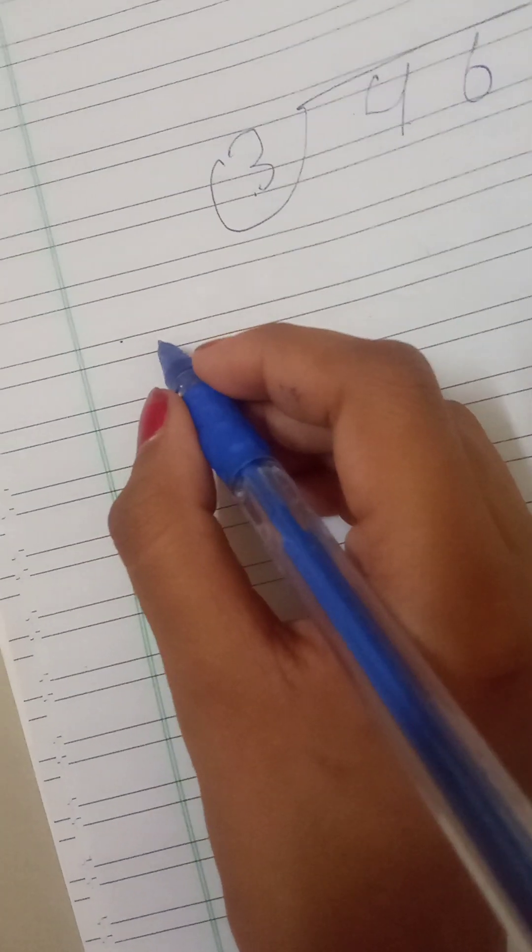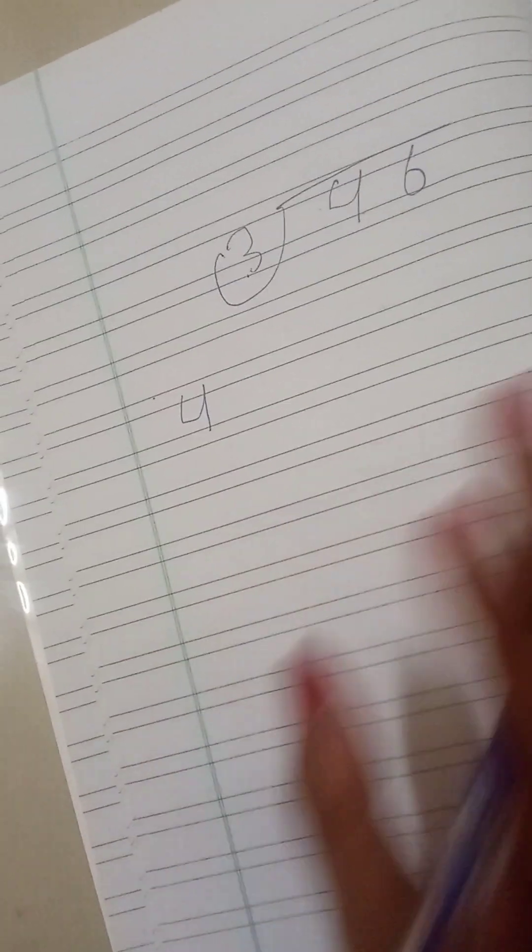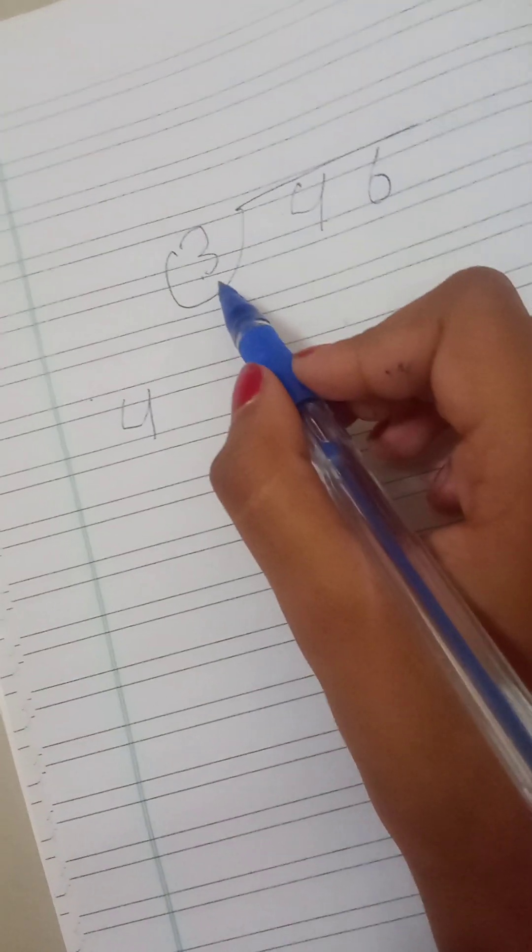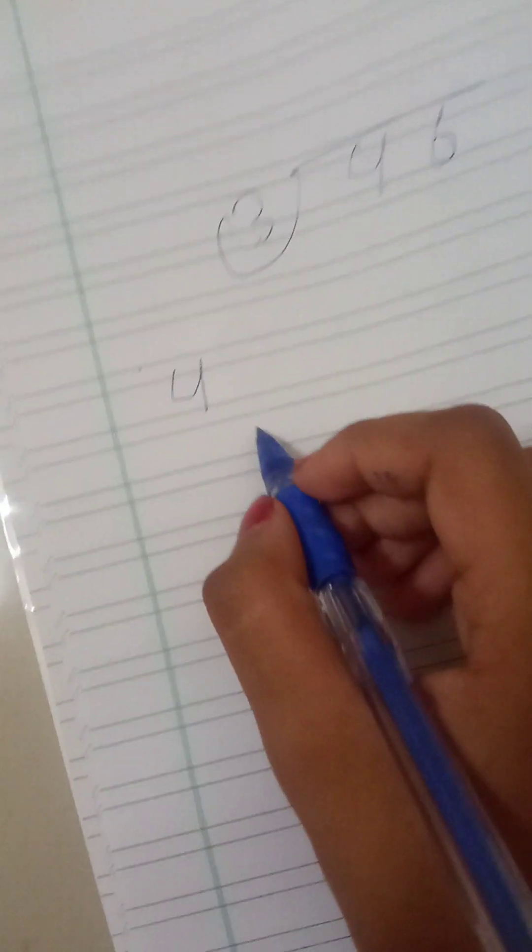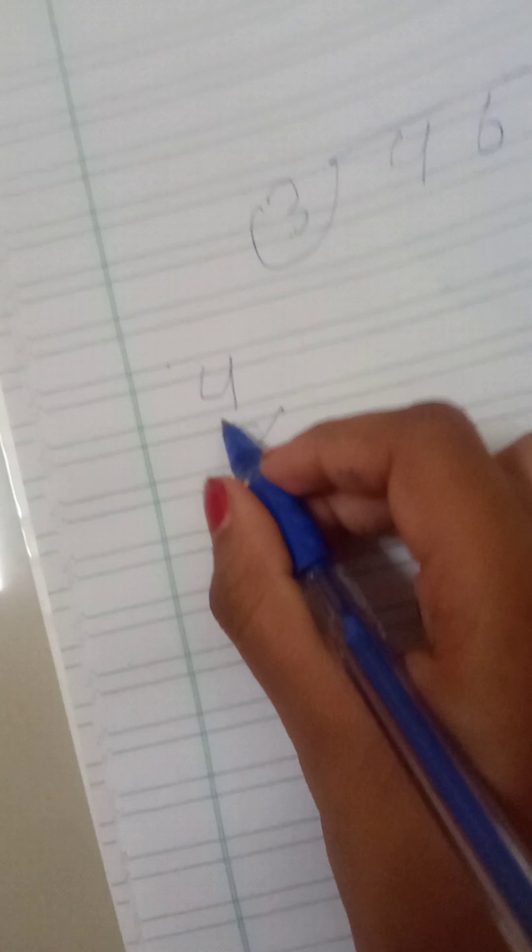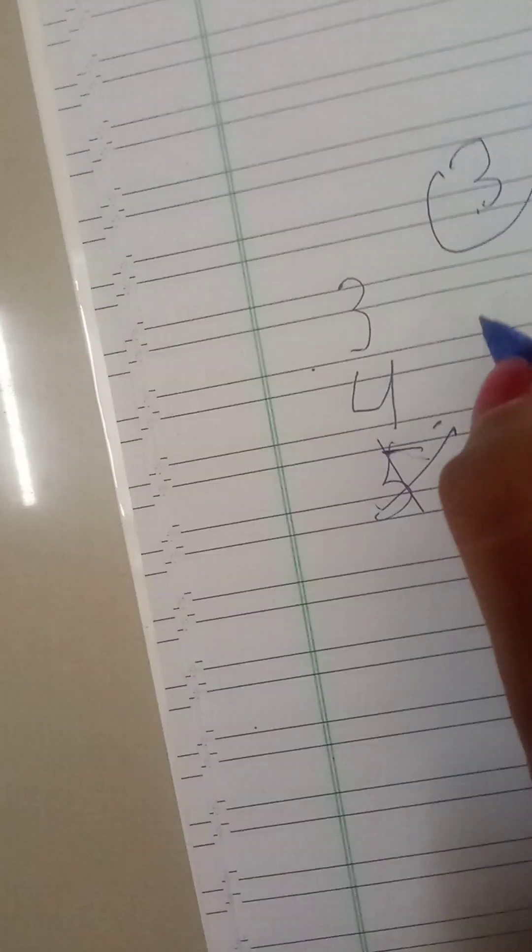Remember guys, when we do division, we don't take the bigger number which is close. For example, 4 doesn't come into 3 tables, so we can't take 5. No, we have to take 3. It's always the smallest number.